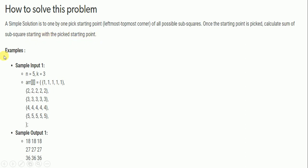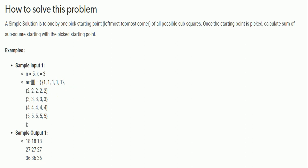Here is Sample Input 1: N equals 5, K equals 3. The matrix is of size 5×5 with elements 1 1 1 1 1 / 2 2 2 2 2 / 3 3 3 and so on. Given K equals 3, you have to find the sum of every sub-square matrix of size 3×3, starting from the top-left corner.